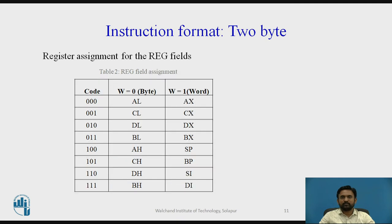The register field occupies 3 bits. This field identifies a register that is one of the instruction operands and depends upon the W bit. The table shows the selection of register code depending on the W bit. When W equals 0, all 8-bit registers are selected; when W equals 1, all 16-bit registers are selected. In many instructions — mainly the register-to-memory variety — the register field is used as an extension of the opcode to identify the type of operation, either 8-bit or 16-bit.